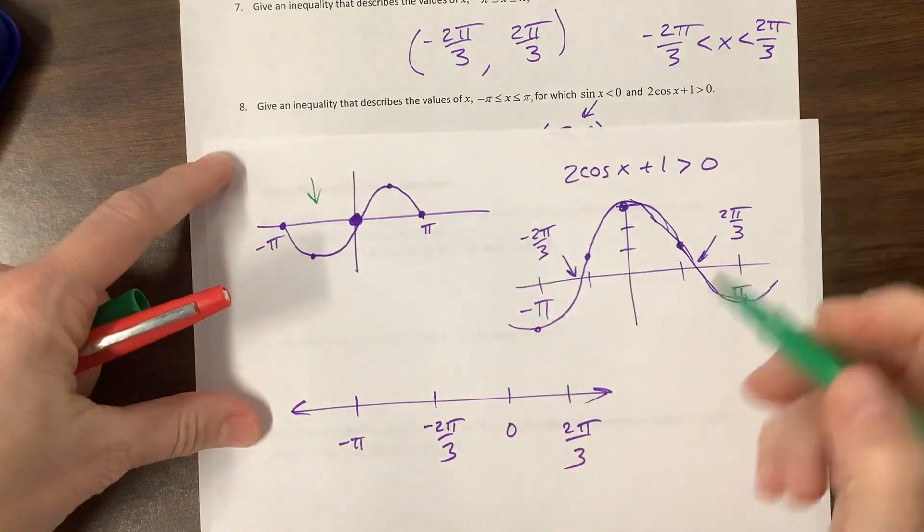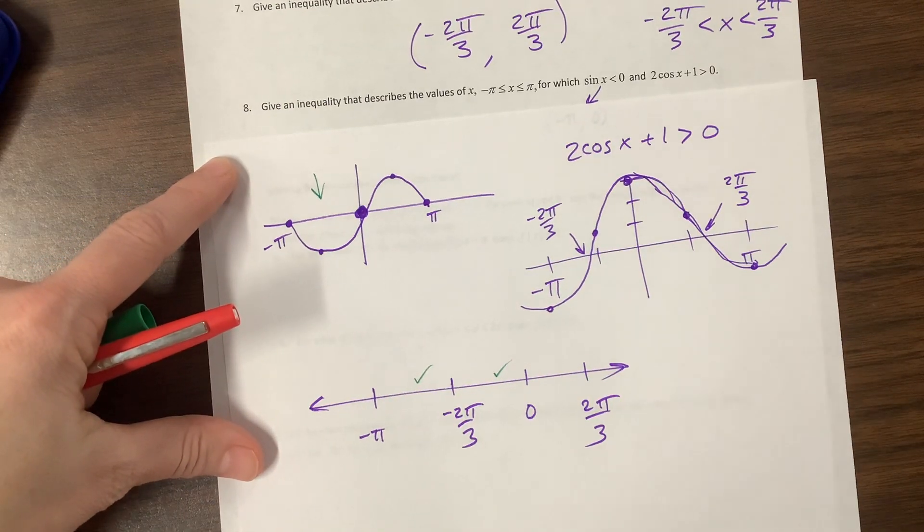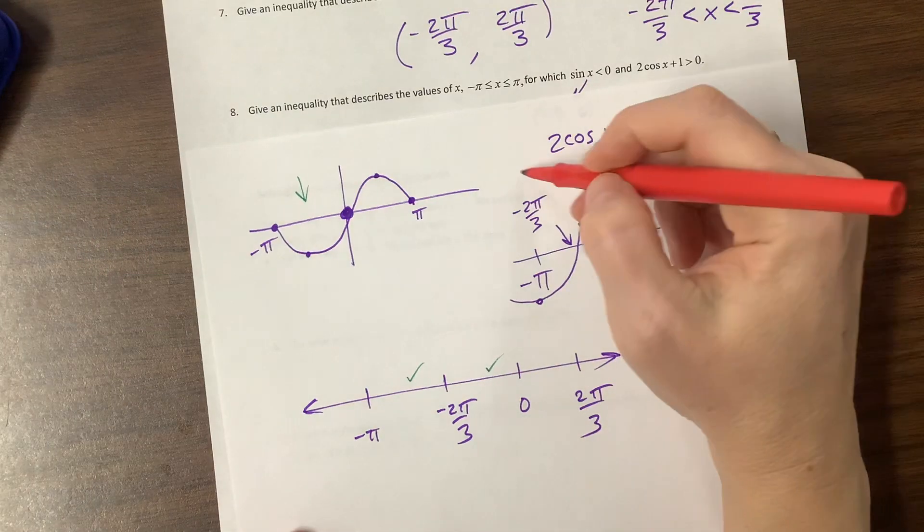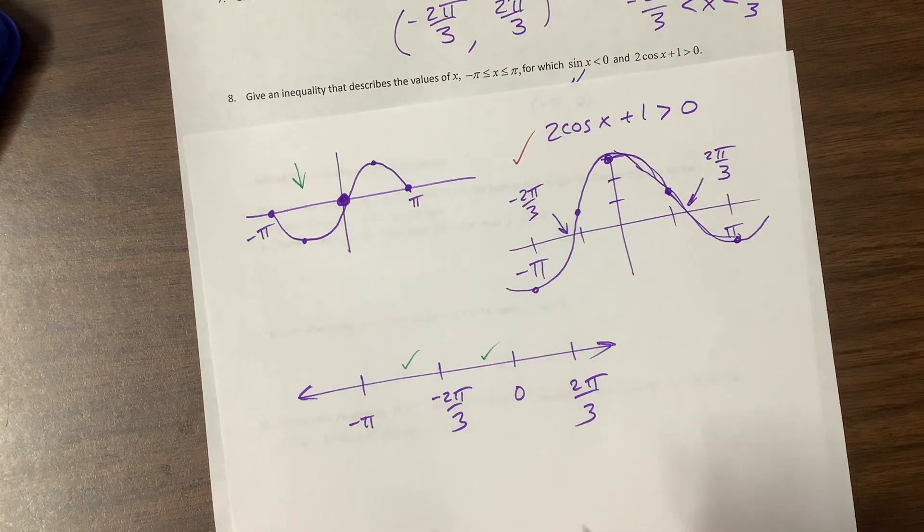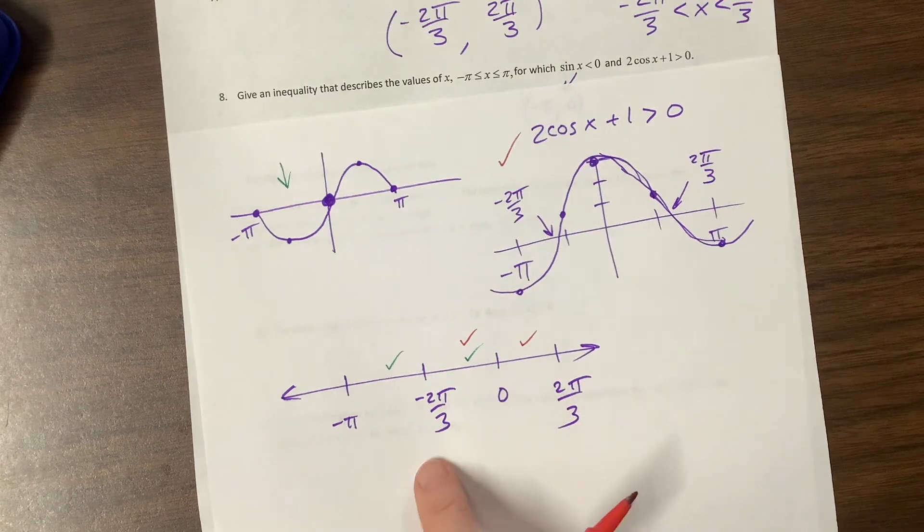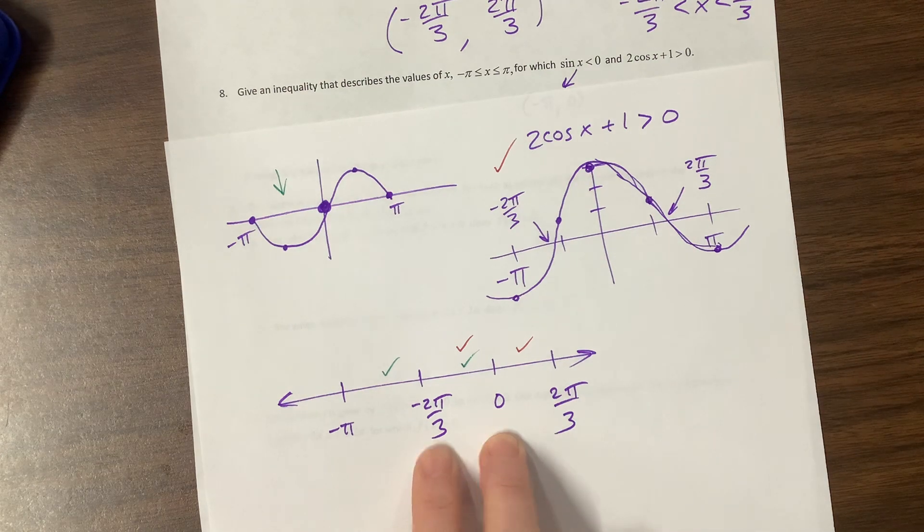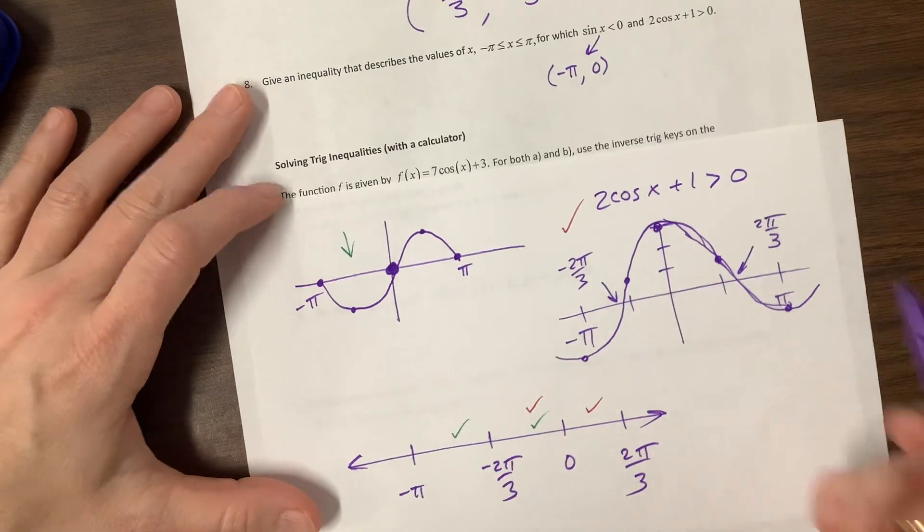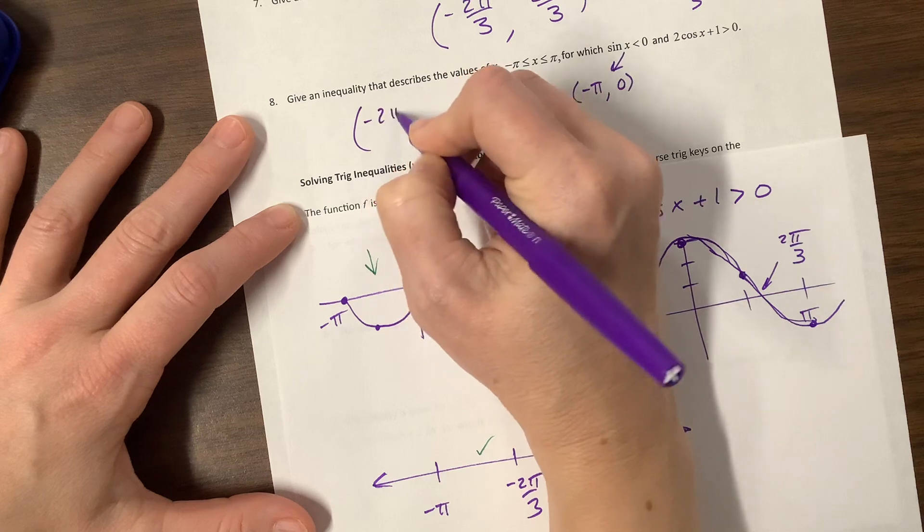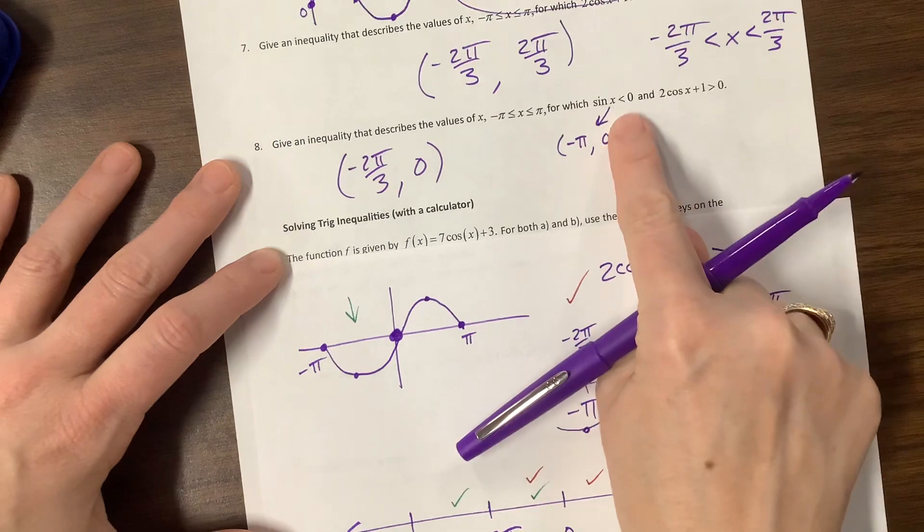This one, we're going to do this one in green, so this one is true where sine is less than 0 is true here and here, in those two intervals, but it is false at the other places. Cosine is true here and here, that gives us a true statement here, but we need both things to happen. So the only way for both things to happen is for us to live inside this world. So our final answer is, it would describe the values for which that and that are true. So it's from negative 2 pi over 3 to 0 with soft brackets on each, because there were not equal signs.